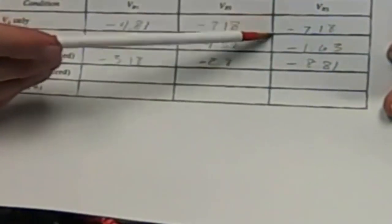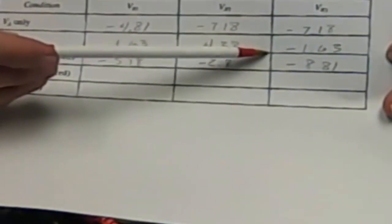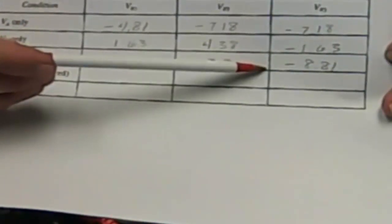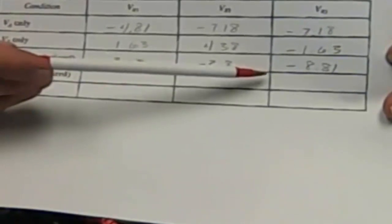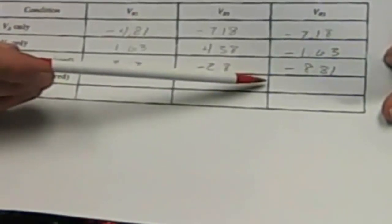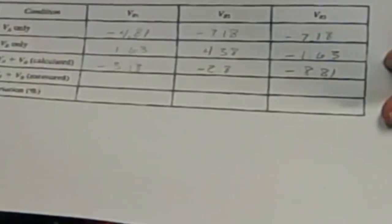Okay, filling in the table. I've placed in my voltages. I've got a minus 4.81 plus 1.63 gives me minus 3.18. I have a minus 7.18 plus 4.38 gives me a minus 2.8. And then a minus 7.18 minus 1.63 gives me minus 8.81. Now I will connect up both power supplies and take the measurements again and see how we fare.